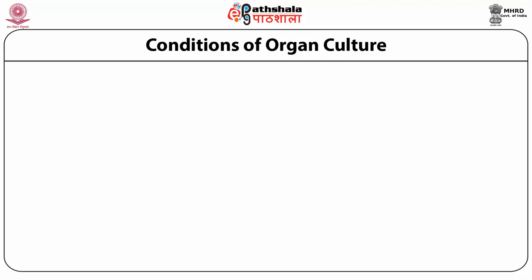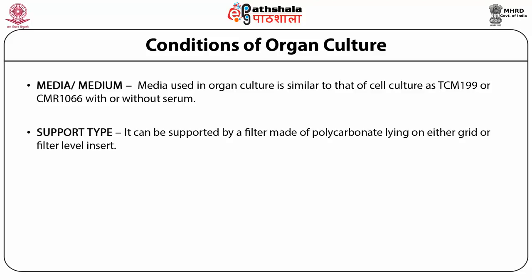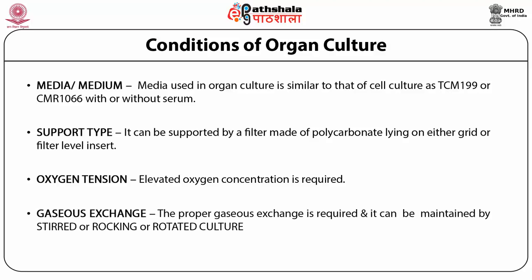Conditions for organ culture. The first requirement is the media or medium. Media used in organ culture is similar to that of cell culture; we can use DCM199 or CMRL10666 with or without serum. Another condition is the support type — it can be a filter made of polycarbonate lying on either a grid or filter level insert. Elevated oxygen concentration is required to maintain cells in proper growth. Gaseous exchange can be maintained using stirred, rocking, and rotated types of culture.